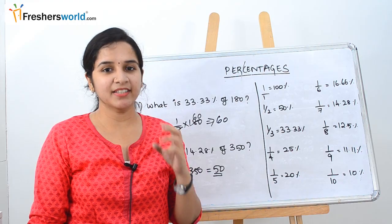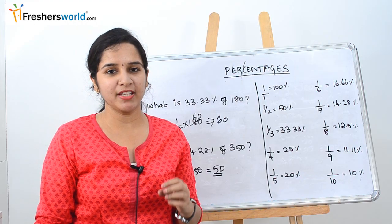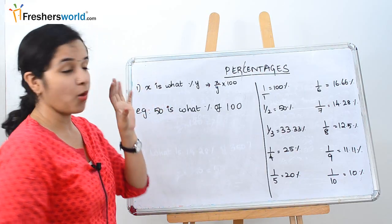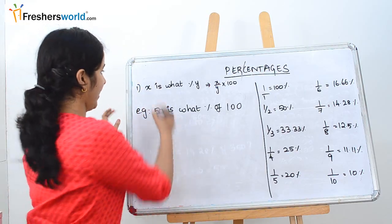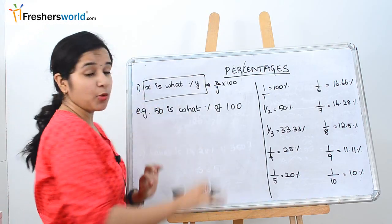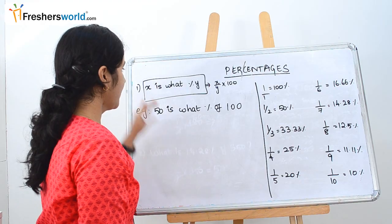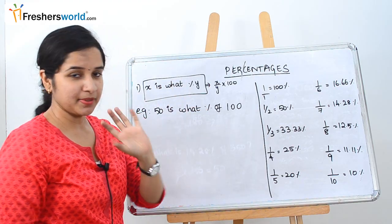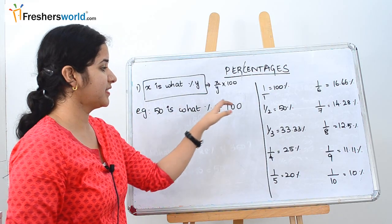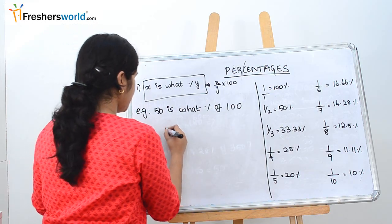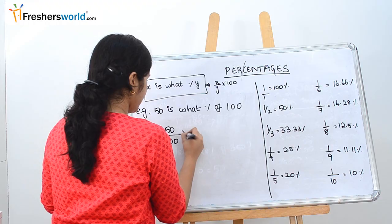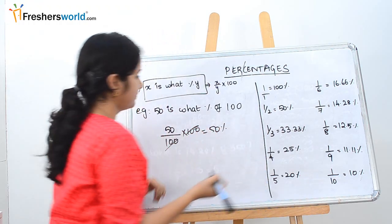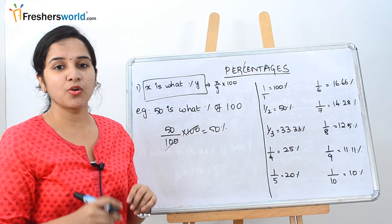Let's understand three basic problem types you might face in percentages. The first type is: x is what percent of y? This is a very basic problem seen in any aptitude exam. The formula is x by y multiplied by 100. For example: 50 is what percentage of 100? That's 50 by 100 into 100, which is nothing but 50 percent.